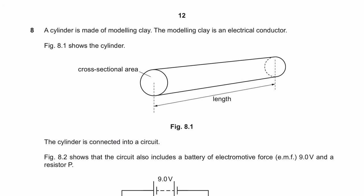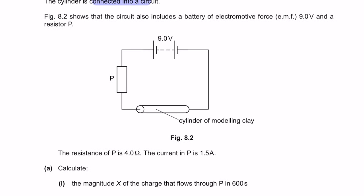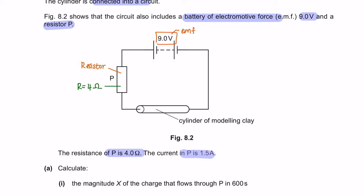Question 8: A cylinder is made of modelling clay, which is an electrical conductor. Figure 8.1 shows the cylinder labelled with its cross-sectional area and length. The cylinder is connected into a circuit. Figure 8.2 shows the circuit also includes a battery of EMF 9 volts and a resistor P. The resistance of P is 4 ohms and the current in P is 1.5 amperes. Whenever you get a circuit question, lay out all the given information into your circuit diagram.